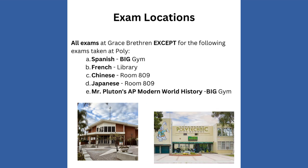Now let's talk about where the exams are located. All of the exams are pretty much located at Grace Brethren Church, which is at 3601 Linden Avenue. This is written on the schedule of AP exams given to all of your AP teachers, which should be posted in the classrooms. There's also a schedule posted on the outside of Ms. Medina's office — the PACE counselor — in the hallway across from the activities office. Spanish is going to be here at the big gym at Poly. French is in the library at Poly. Chinese and Japanese are in room 809 at Poly. And Mr. Pluton's AP Modern World History class will also test here at Poly in the big gym.